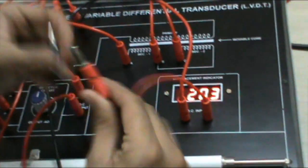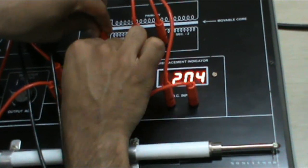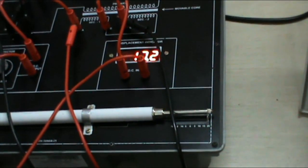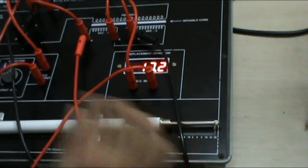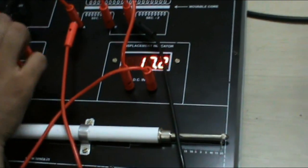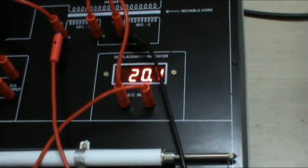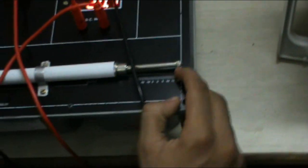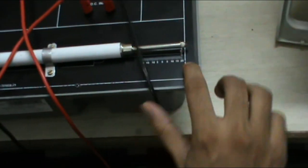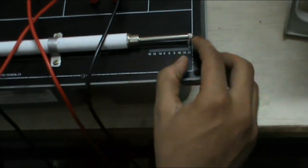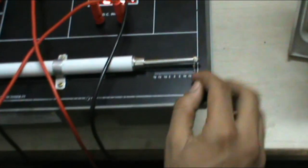Now to see the output, I connect channel 2 with this A and black lead to C. Now as we displace it from 20 to 0 to minus 20mm, the displacement can be seen in this indicator.